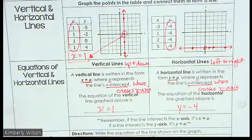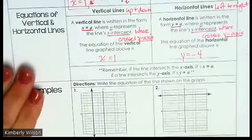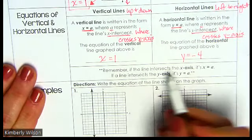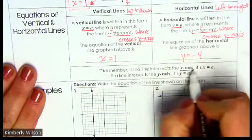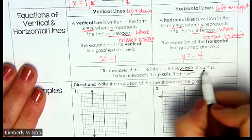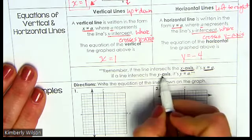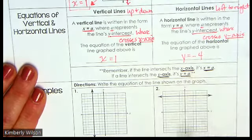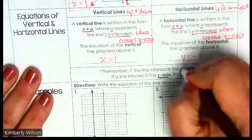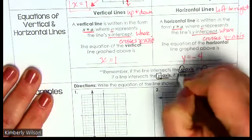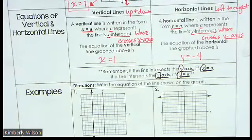Let's look at a couple of examples and just write them. What is the equation of the line? Remember: if the line intersects the x-axis, it's x equals a. If the line intersects the y-axis, it's y equals a. X-axis: x equals a. Y-axis: y equals a number.